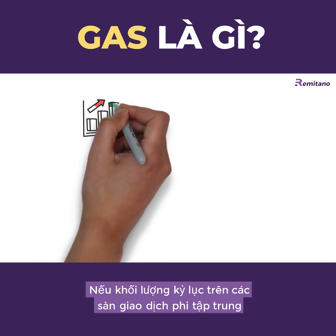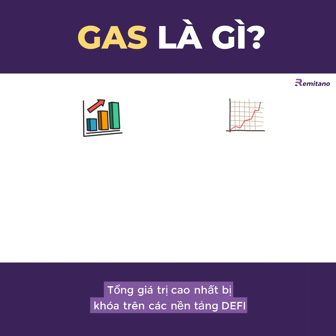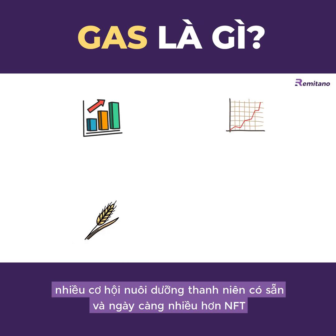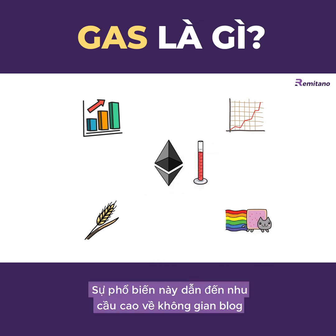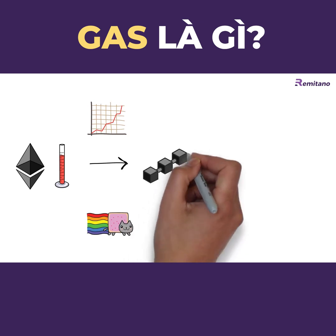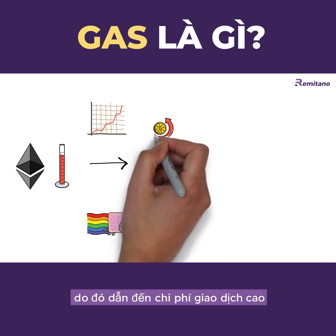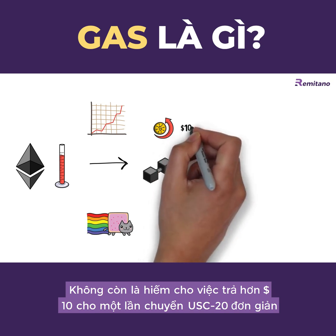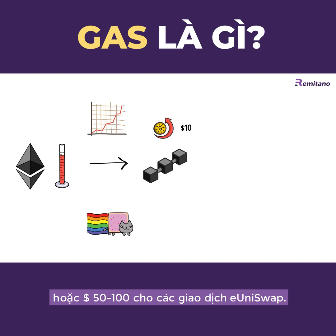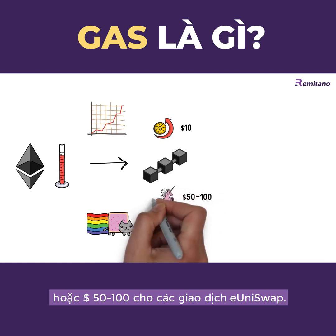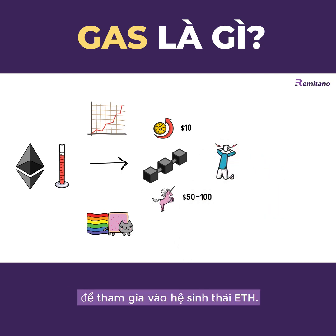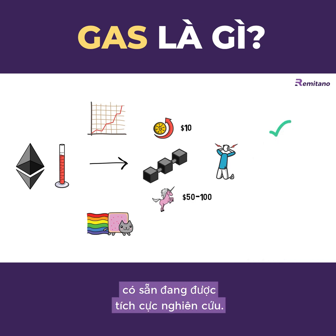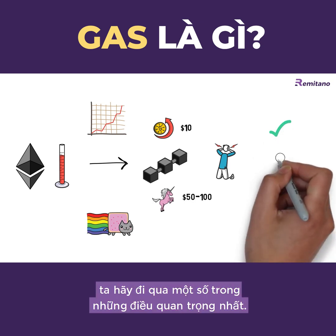With record volumes on decentralized exchanges, the highest total value locked on DeFi lending platforms, multiple yield farming opportunities, and minting more and more NFTs, the Ethereum network is as busy as ever. This popularity results in high demand for block space, which in turn results in high transaction costs. It's not uncommon to pay more than $10 for a simple ERC-20 transfer or $50 to $100 for a Uniswap transaction. Fortunately, there are multiple solutions either already available or being actively worked on.